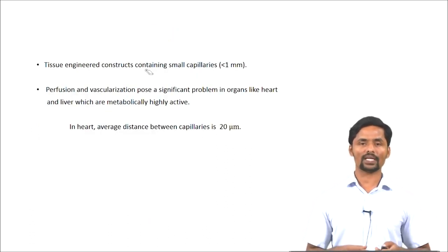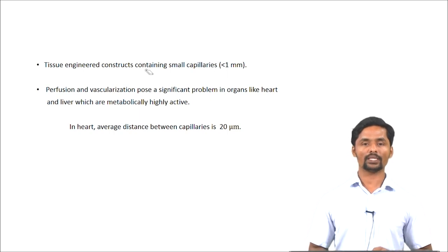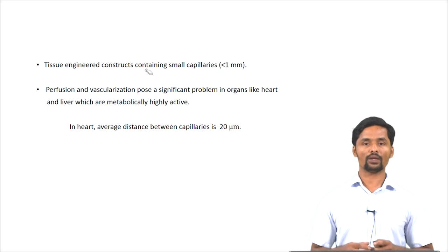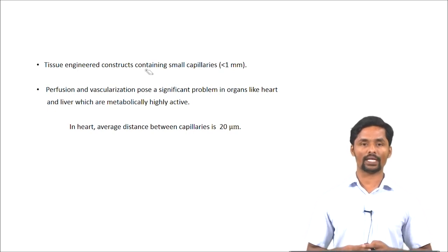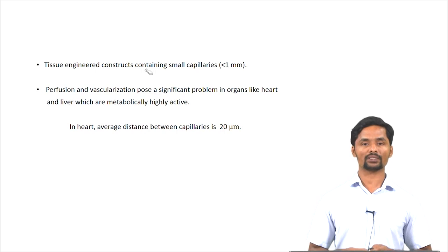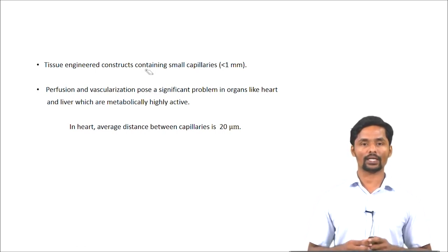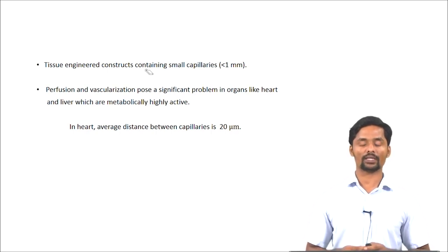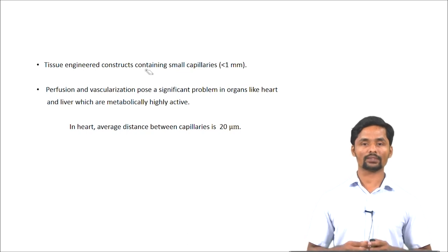There are a few other challenges in vascularization. It is difficult to construct tissue engineering scaffolds with smaller capillaries whose diameter is less than 1 mm. Perfusion and vascularization is a significant problem in metabolically highly active organs like the heart and liver. For example, in the heart, the intercapillary distance is around 20 micrometers, and achieving such a highly vascularized tissue is a challenge.